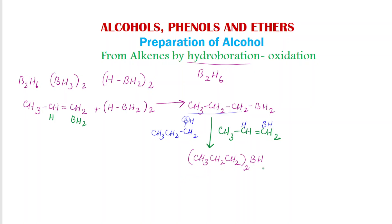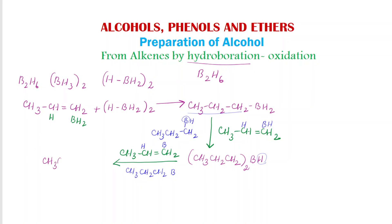Since this boron still contains one hydrogen, it again reacts with another molecule of alkene CH3CH=CH2. This hydrogen is added to one carbon and boron is added to the other carbon. Since boron is already bonded to two alkyl parts, we get the product (CH3CH2CH2)3-B. Since boron now has no more hydrogen to get attached to the alkene, the reaction ends here, and the final product is this trialkylboron.